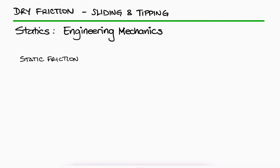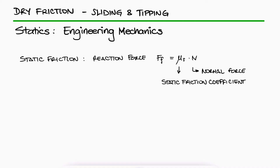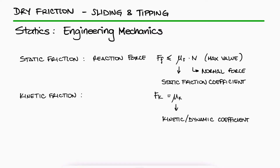Static friction is a reaction force that can have a maximum value of mu sub s, the static friction coefficient, times the normal force N. What this means is that the static friction is not necessarily mu times N — that's only the maximum value it can take when external forces cause the reaction force to exist. This is in contrast to kinetic friction, which is always the dynamic or kinetic friction coefficient mu sub k times the normal N. Misunderstanding this maximum value for static friction can often cause problems while solving static friction problems.